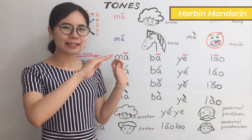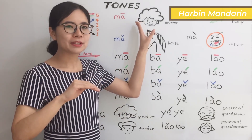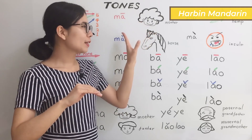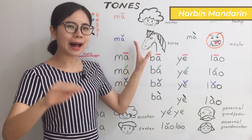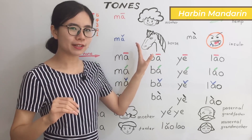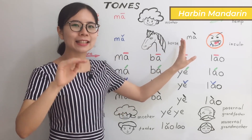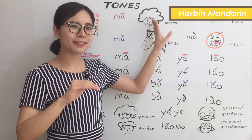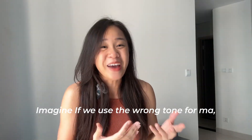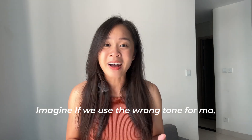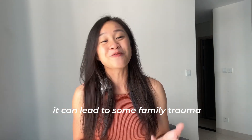You can 爱你的妈妈 — that means love your mother. You can also 爱你的马 — love your horse. But you should never 骂你的妈妈 — that means insult your mother. Imagine using the wrong word for 'ma' when you want to say 'mother' — it could lead to some family drama.